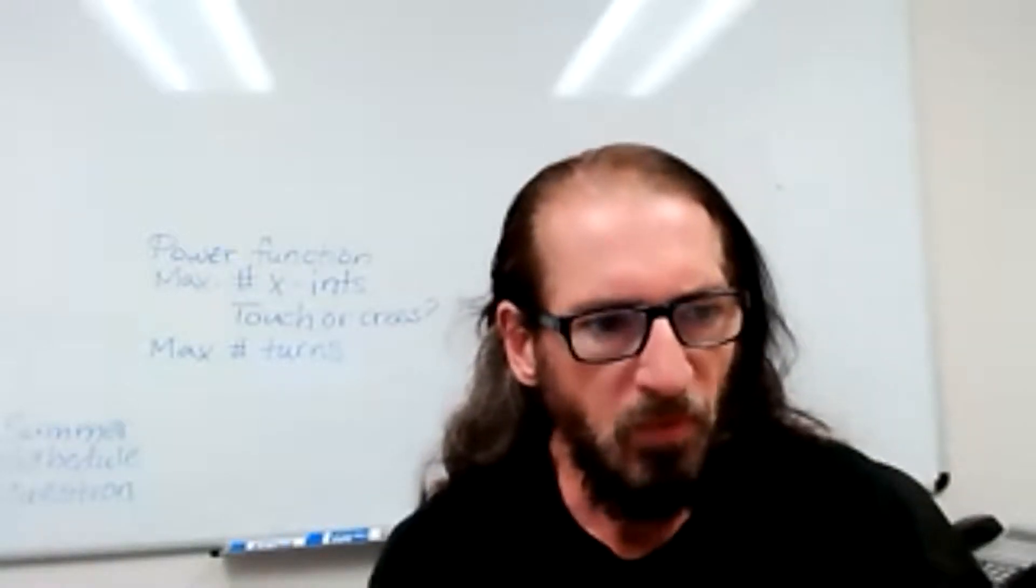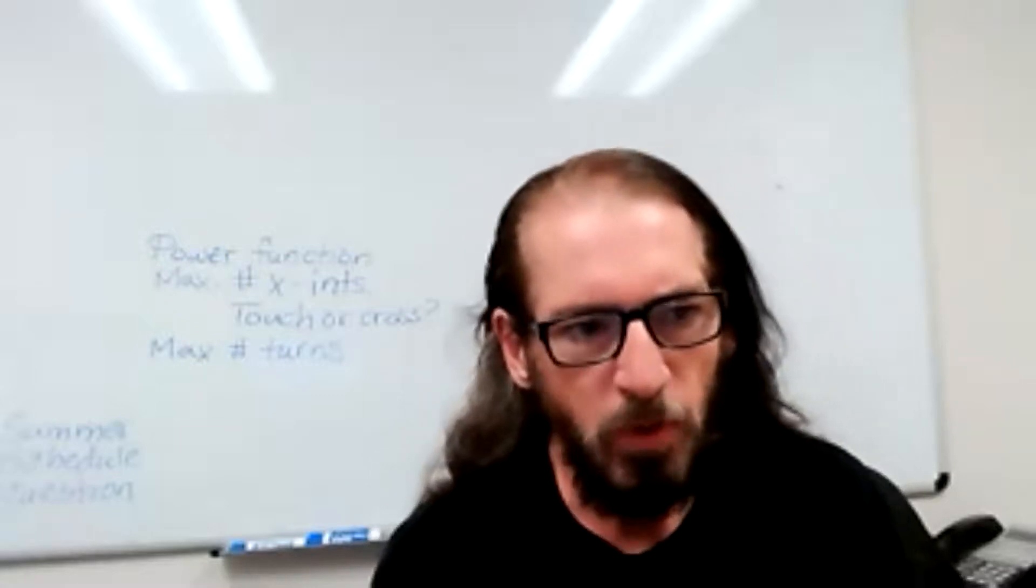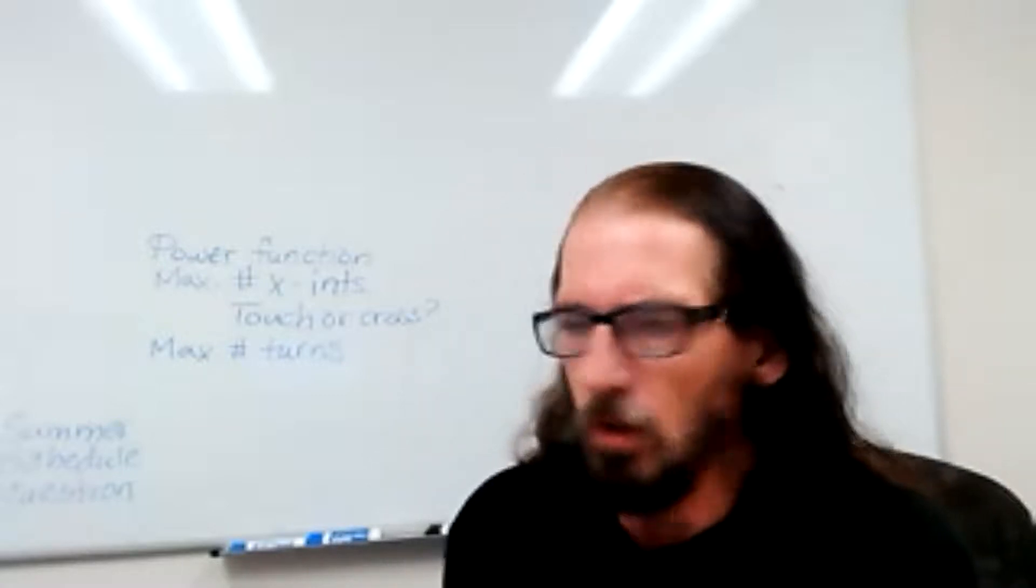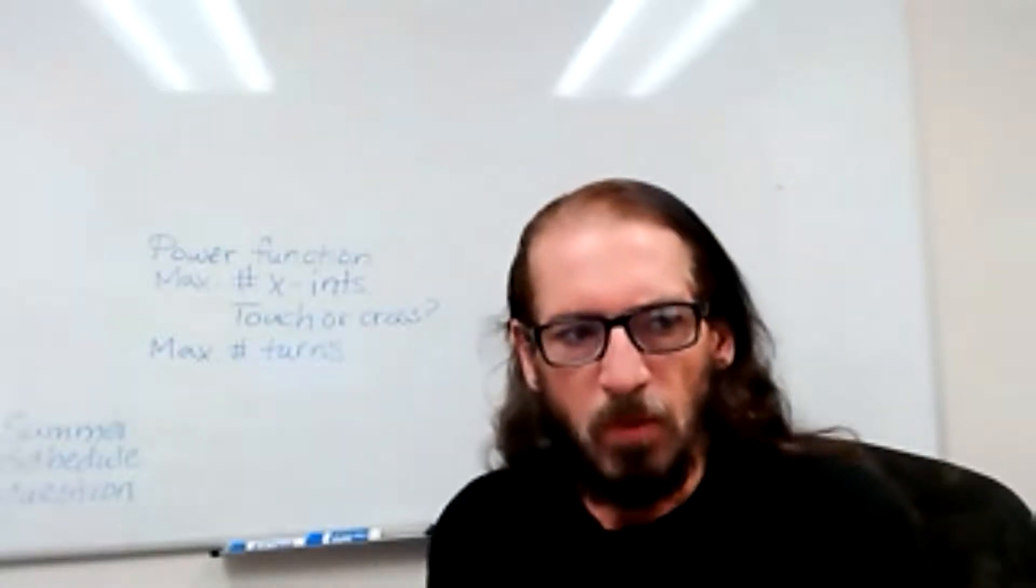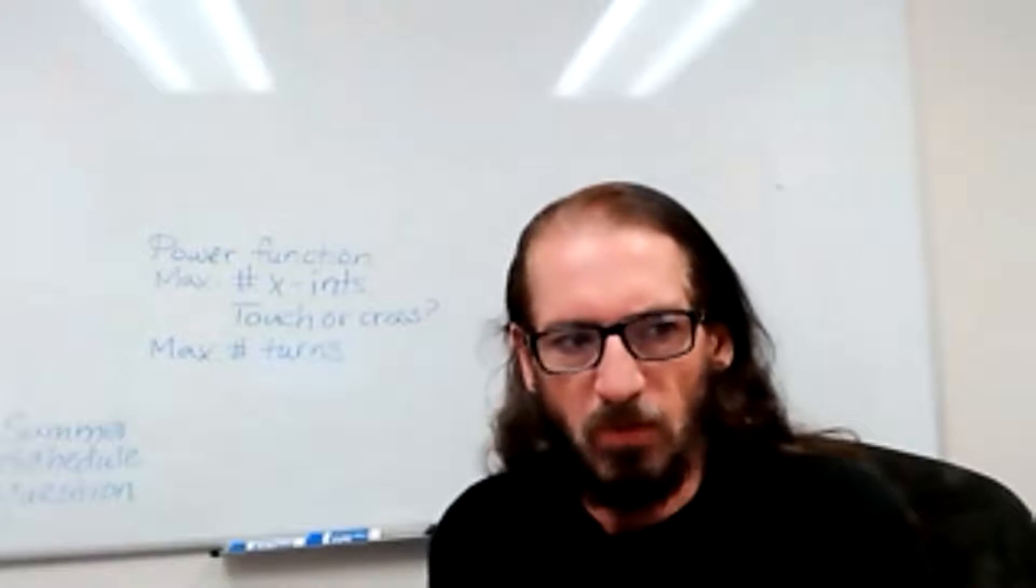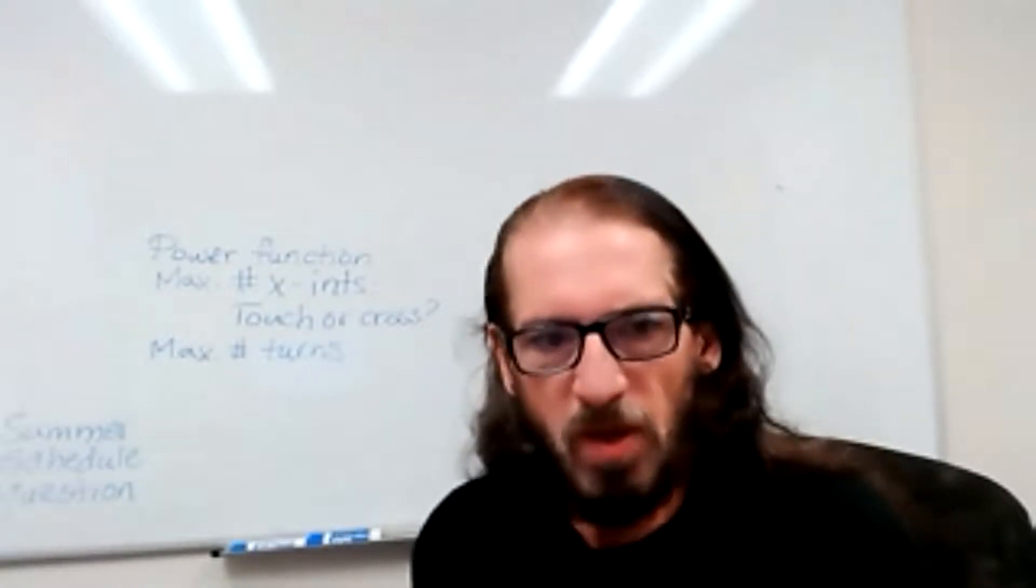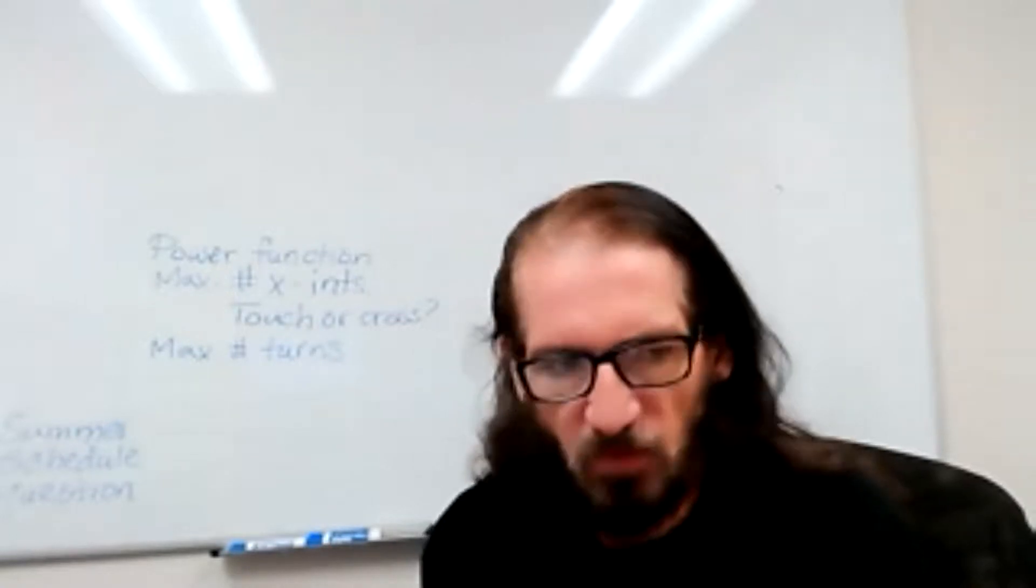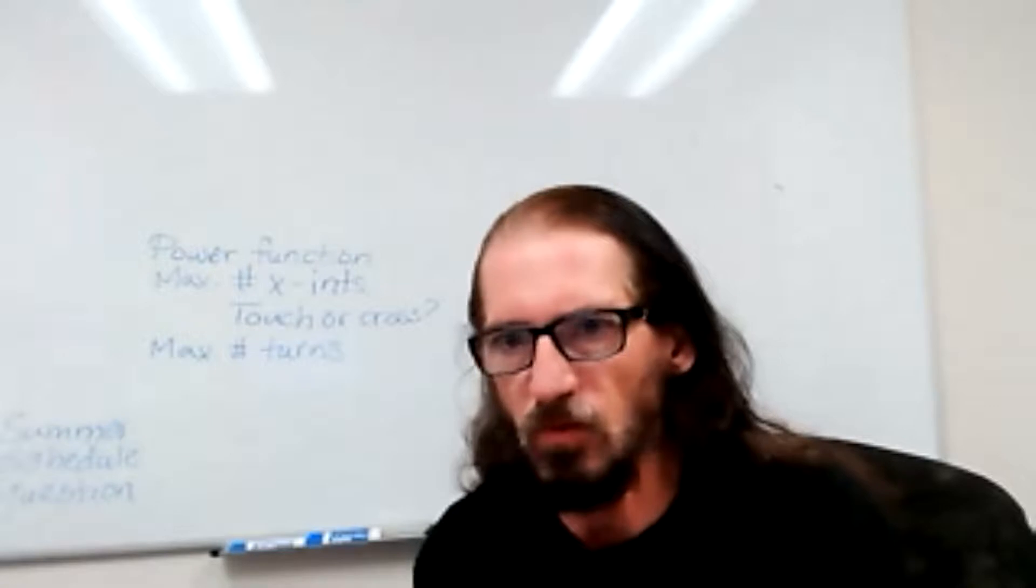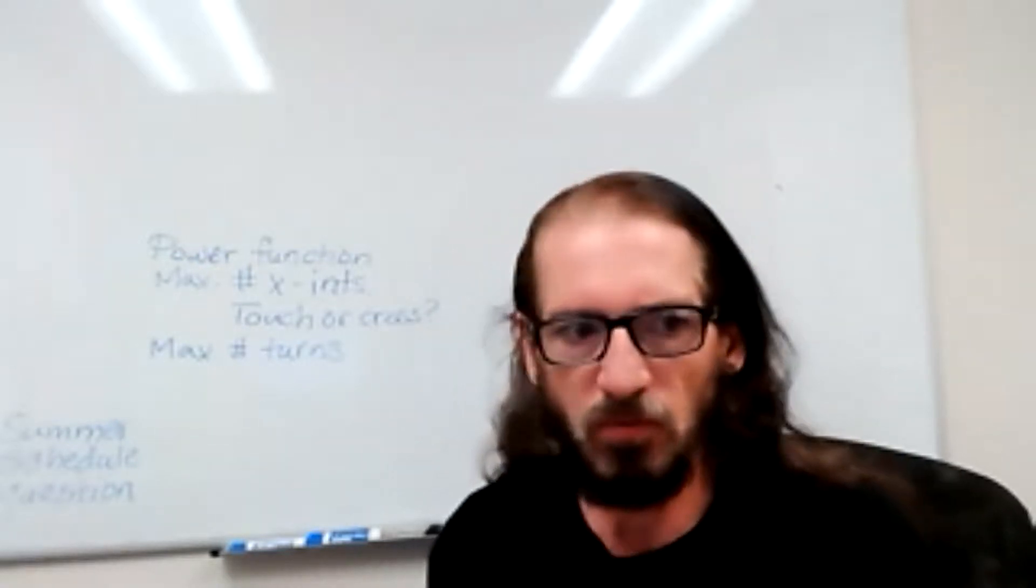Hello, Professor Sargent here with you again. Going to have a hopefully quick discussion of graphs and polynomial functions, talking about the number of x-intercepts, whether we have the graph touching or crossing the x-axis at an x-intercept, and the number of turns. What do we mean by a turn?